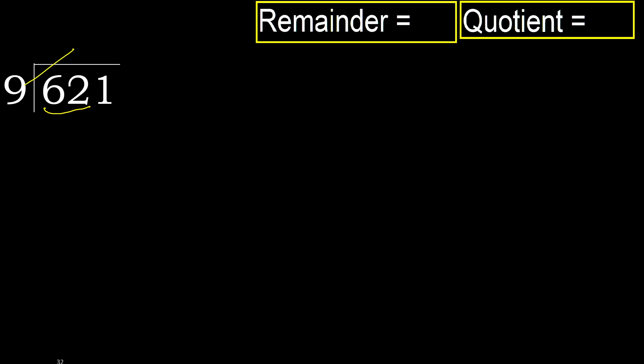9 multiplied by which number is nearest to 62, but not greater. 9 multiplied by 7 gives 63, which is greater. Multiplied by 6 gives 54, which is not greater. Subtract: 62 minus 54 is 8.